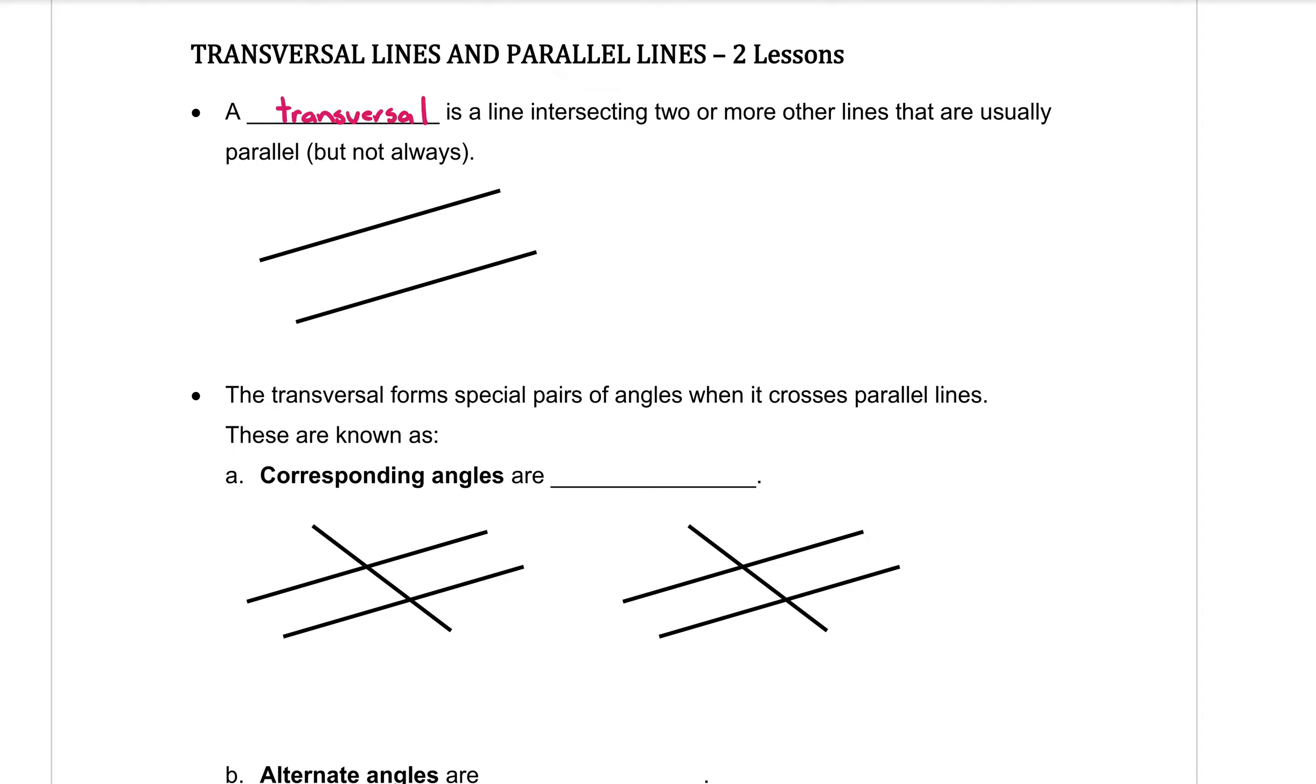A transversal is the name that we give to a line that is intersecting two or more other lines that are usually parallel. Okay, not always parallel, but for our sake we're going to be looking at ones that are parallel.